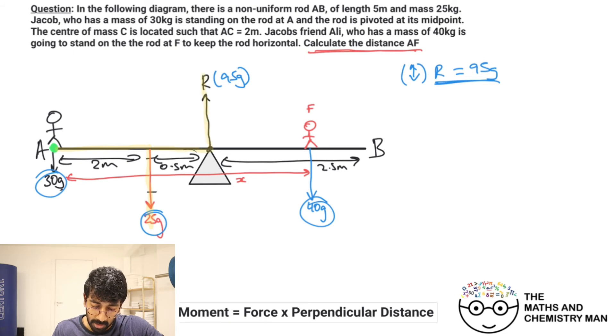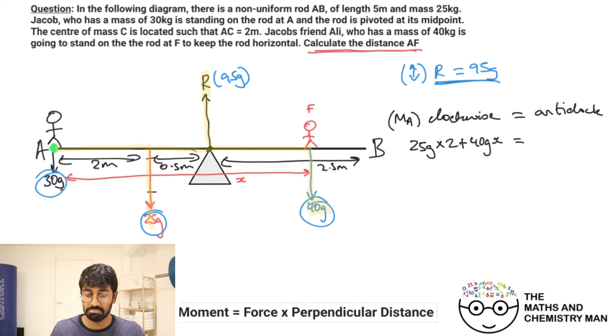The only forces we'll need to consider then is the actual weight of the beam, the reaction force there, and then the weight of Ali over here. If we're setting up moments from A, this is an equilibrium—it's perfectly horizontal, which means equilibrium. So we should set up clockwise equals anticlockwise.